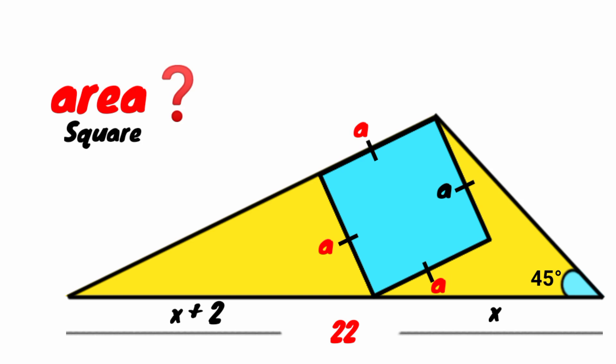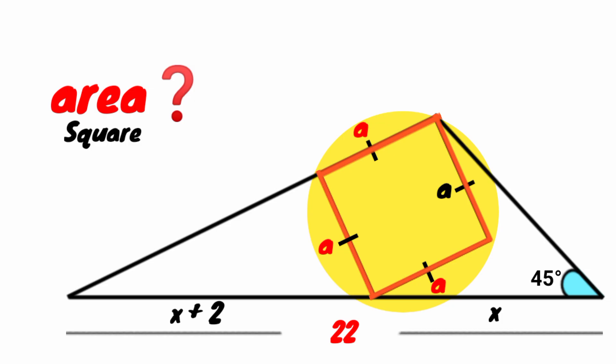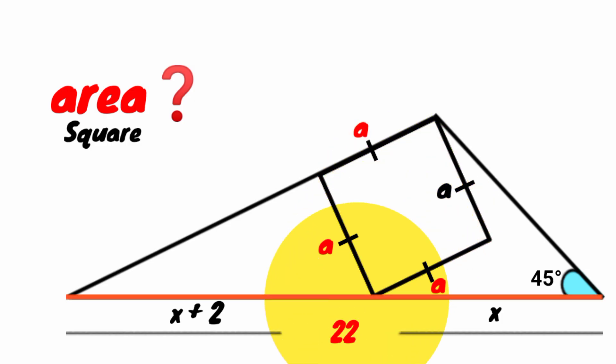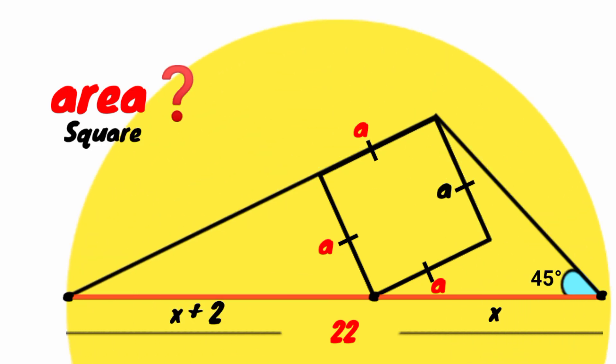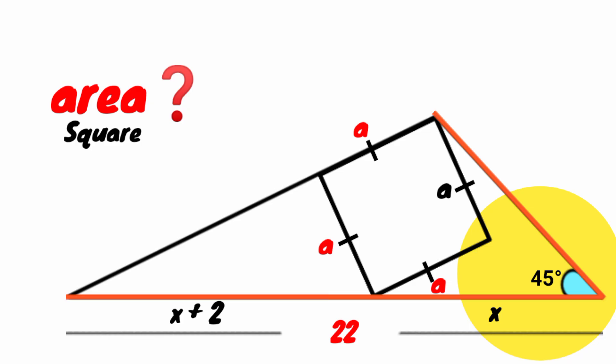Hello friends, you are welcome back to another interesting question. We are to determine the area of the square. The length of its sides are A, then this side we have its length to be 22 units. It is divided into two segments, one with length x and the other its length is x plus 2. We have here an angle of size 45 degrees.